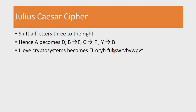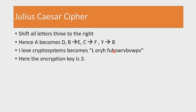With the Julius Caesar cipher, since we're encrypting by shifting letters to the right, our encryption key is a numerical value. In this case the encryption key is 3, because we are shifting letters three times to the right in order to encrypt the plain text message.